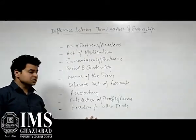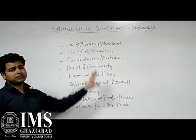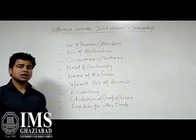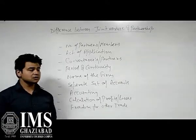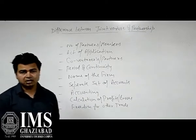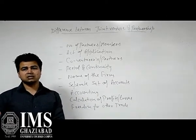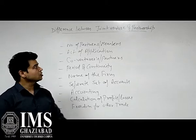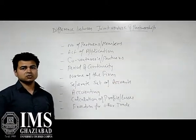The last point is freedom for other trade. In the case of joint venture, the co-venturers are free to do a similar nature of business. But in the case of partnership, the partners are not free to do similar business — they are restricted to concentrate on their own partnership business. That's all. Thank you.